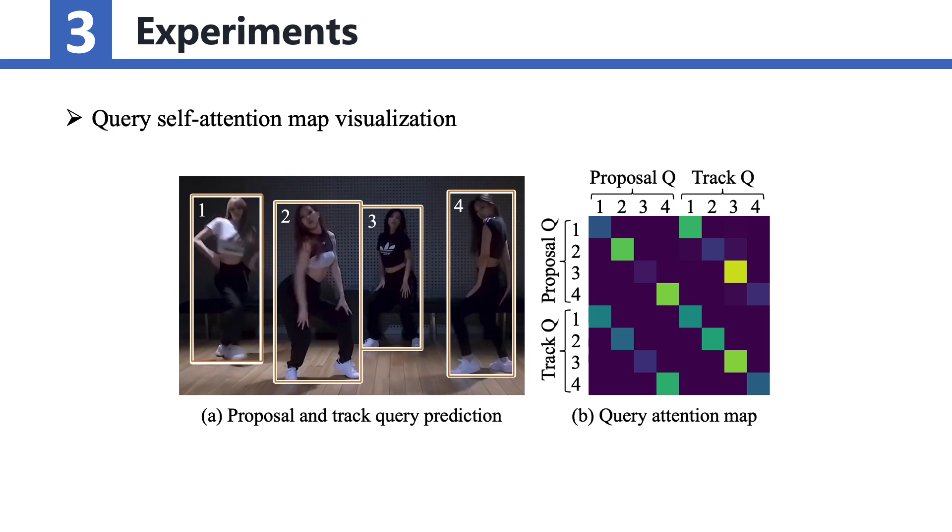In the query self-attention map, we observe a distinct interaction between the proposal query and the track query of the corresponding instance. The track query suppresses the proposal query to prevent redundant detections. Conversely, the proposal query provides some information to assist the track query. Our findings indicate that YOLOX proposals contribute to the localization and tracking of the track queries.